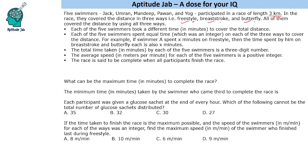Each of the five swimmers took a different time to cover the total distance. They spent equal time on each of the three ways. So for example, if swimmer A spent X minutes on freestyle, then the time spent on breaststroke as well as butterfly will also be X minutes.